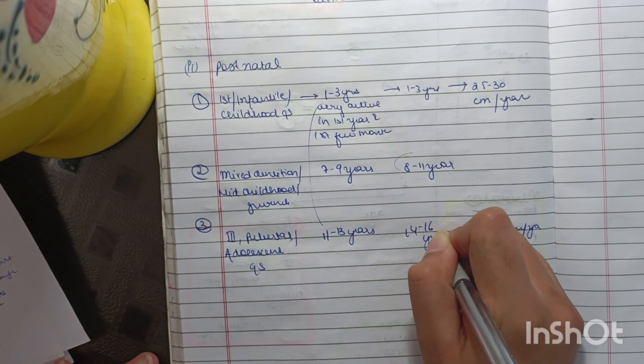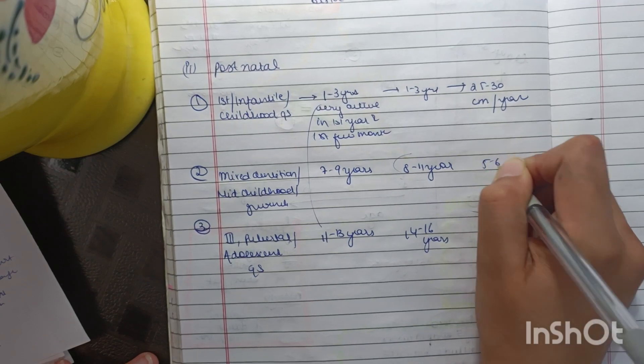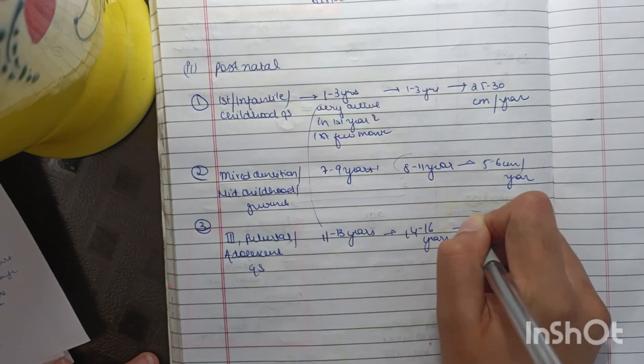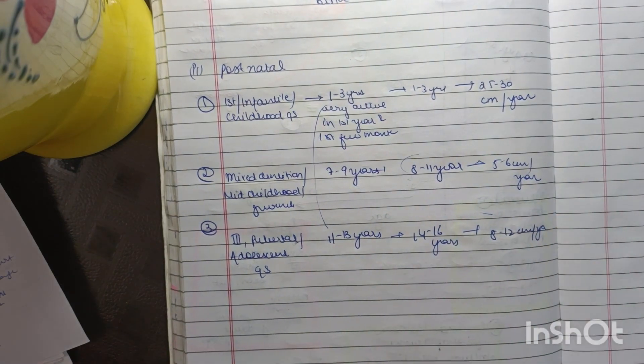For pubertal, 11 to 13 years for females, this you will have to remember, 14 to 16 years for males. In this, 5 to 6 cm per year. So this completes the growth spurts that usually occur.